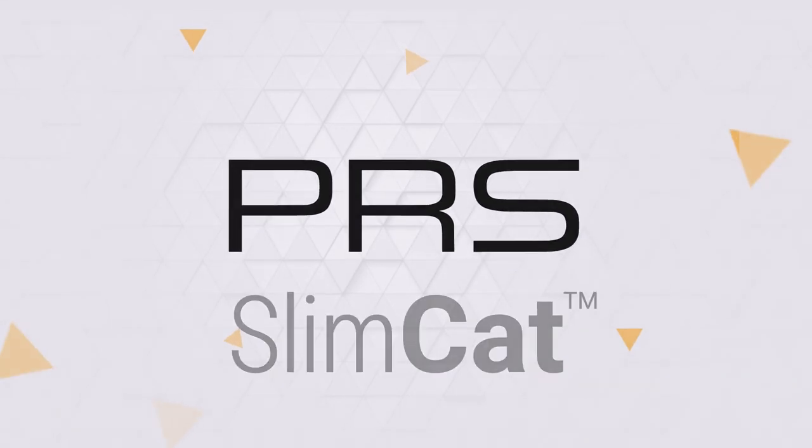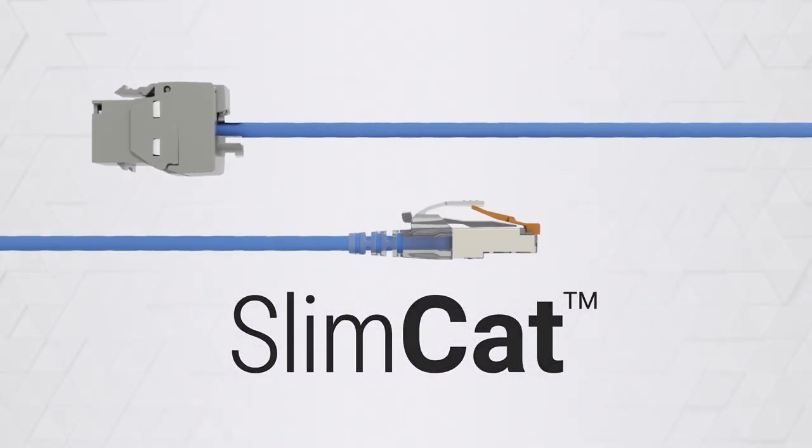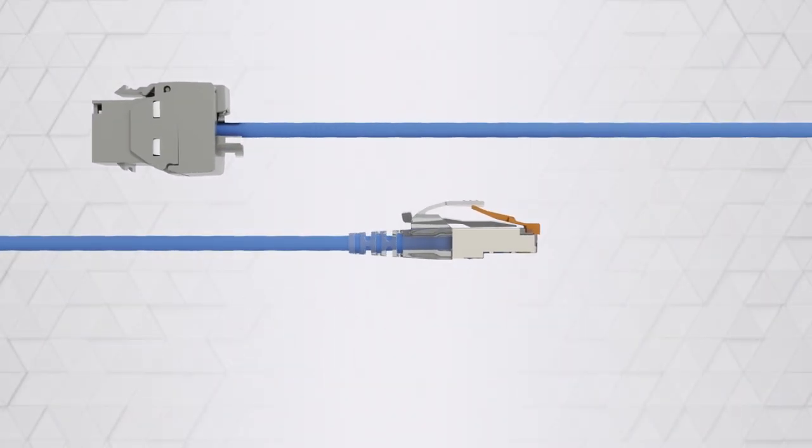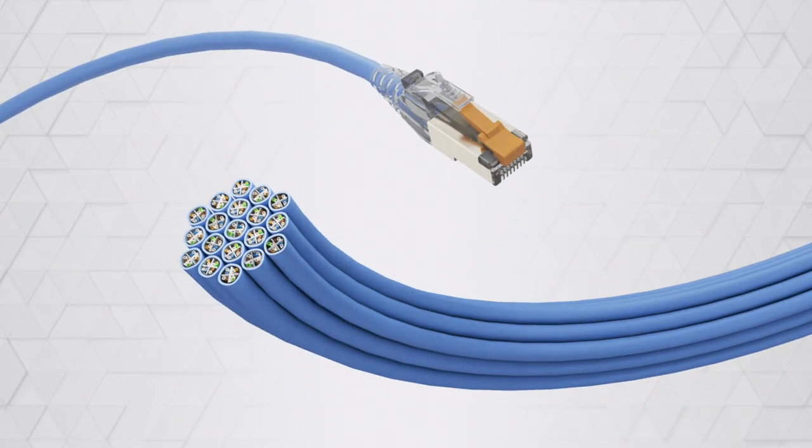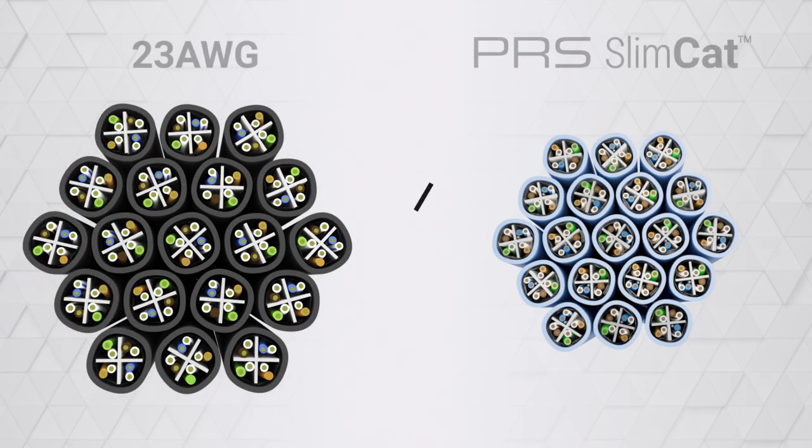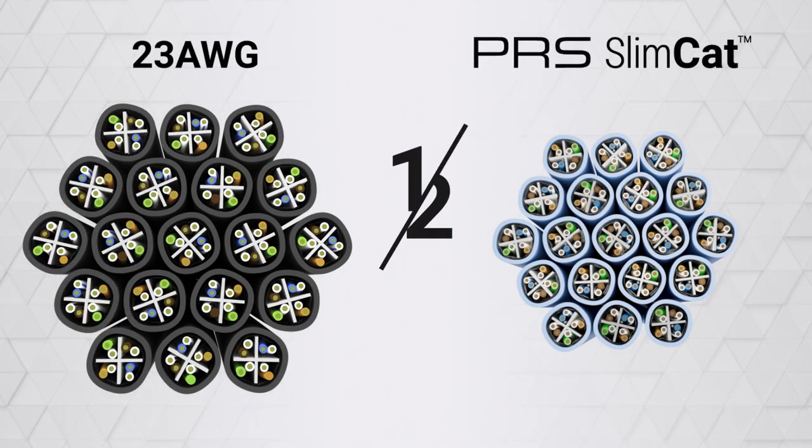This is the Kord's PRS SlimCat CAT6A network cable system. This innovative, high-density Category 6A cable system is designed for professional installations, delivering all the power of CAT6A in half the size.